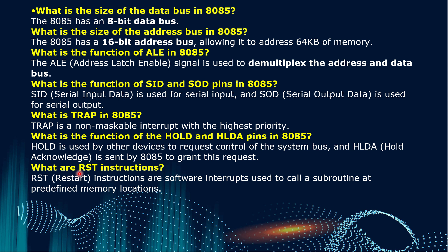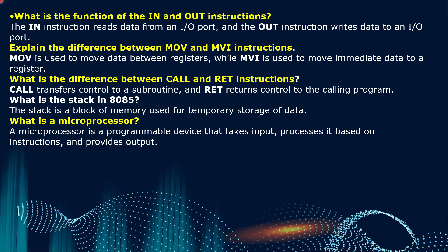What are RST instructions? RST (Restart) instructions are software interrupts used to call a subroutine at predefined memory locations. What is the function of IN and OUT instructions? The IN instruction reads data from an I/O port and the OUT instruction writes data to an I/O port. What is the difference between MOV and MVI instructions? MOV is used to move data between registers, while MVI is used to move immediate data to a register.